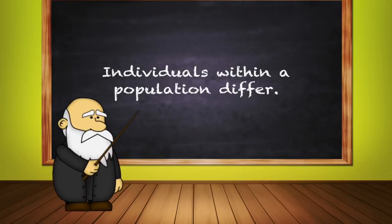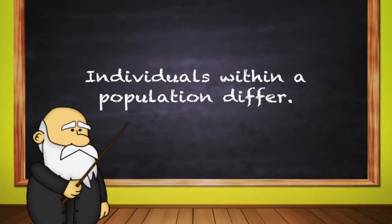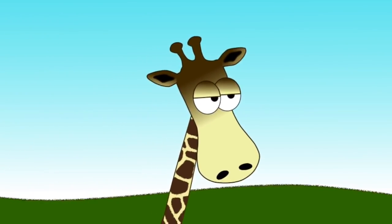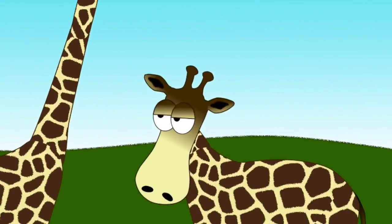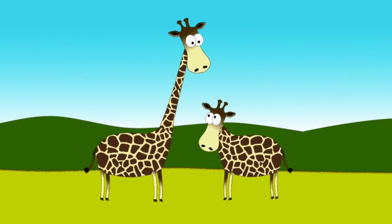Condition number one: individuals within a population differ. There are features that differ within populations of the same animal. In our case, the feature that varies between our giraffes is neck length. Some giraffes were born with long necks, some were born with short necks.